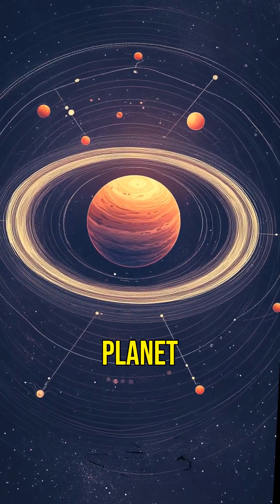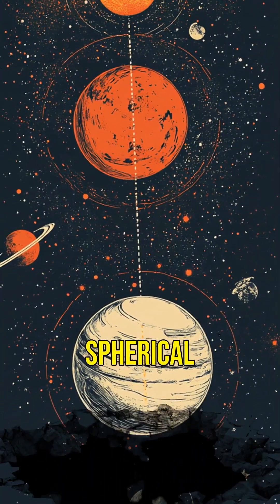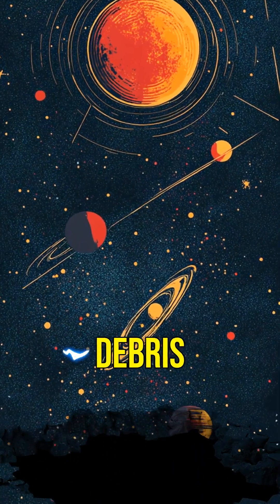To be a planet, an object must orbit the sun, be spherical, and have cleared its orbit of other debris.